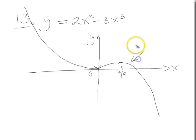Let's just label it, then. This is y equals 2x squared minus 3x cubed. There we go. Good.